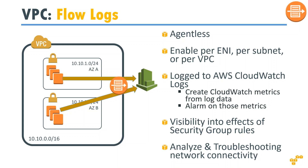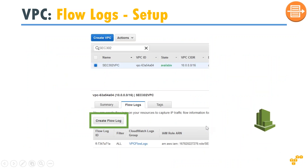All the metrics are chartable and visualizable. You can use AWS CloudWatch itself to visualize those metrics, or you can feed it into another tool like Splunk or some other log analyzer system and make your own charts — for example, how much traffic is going through your VPC, what is the network latency, what are the incoming IP addresses being rejected, or whether there is a malicious attack on a particular interface. That is the introduction to flow logs.